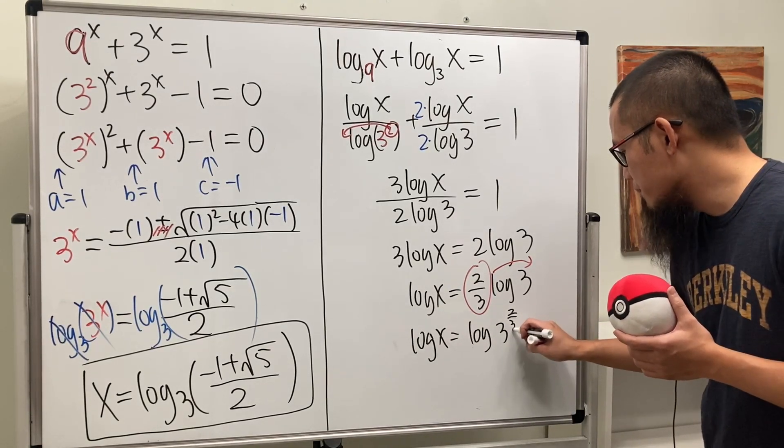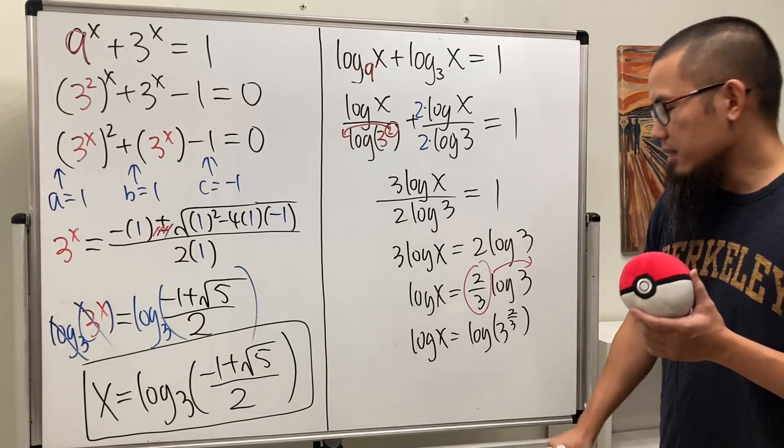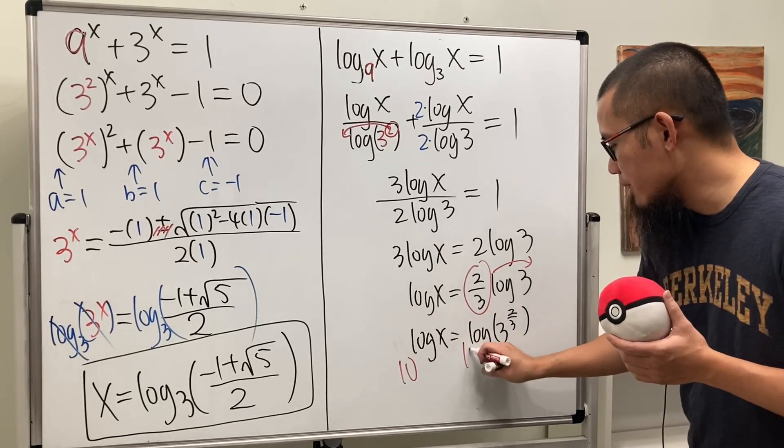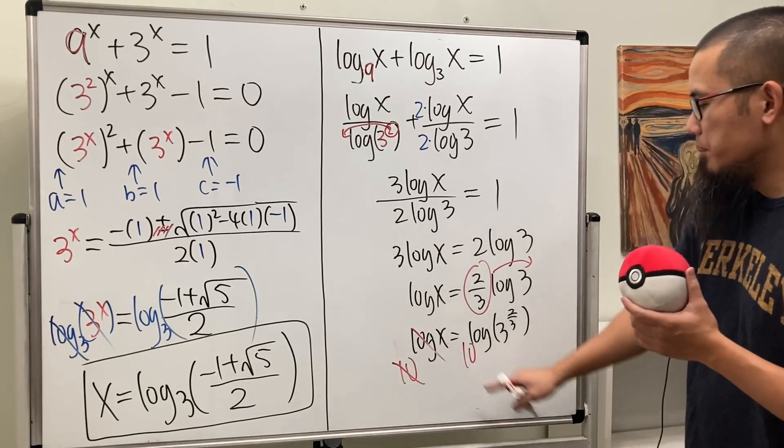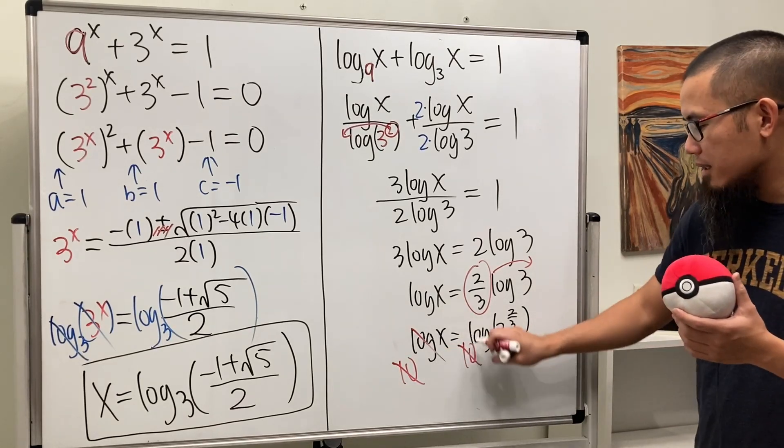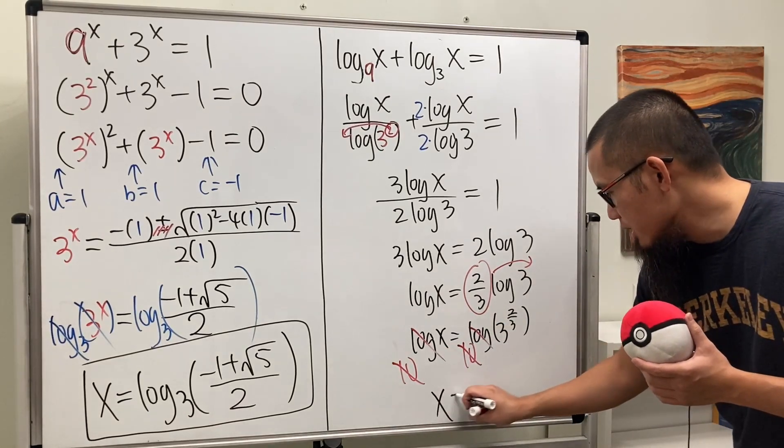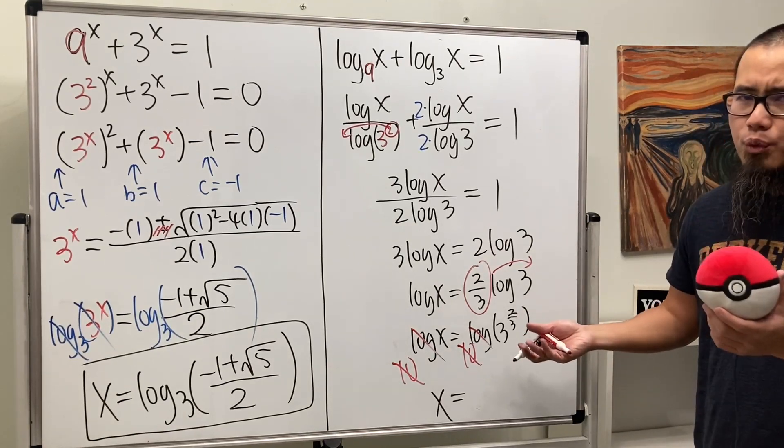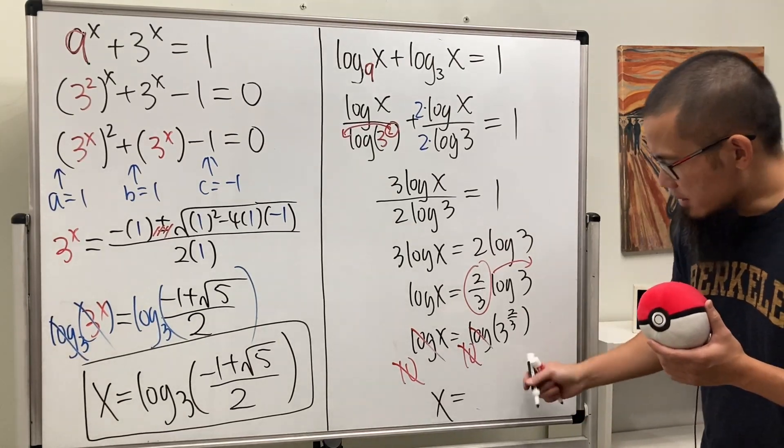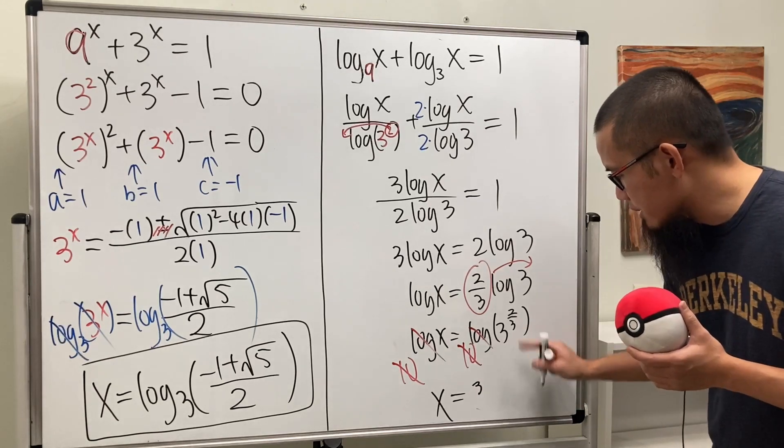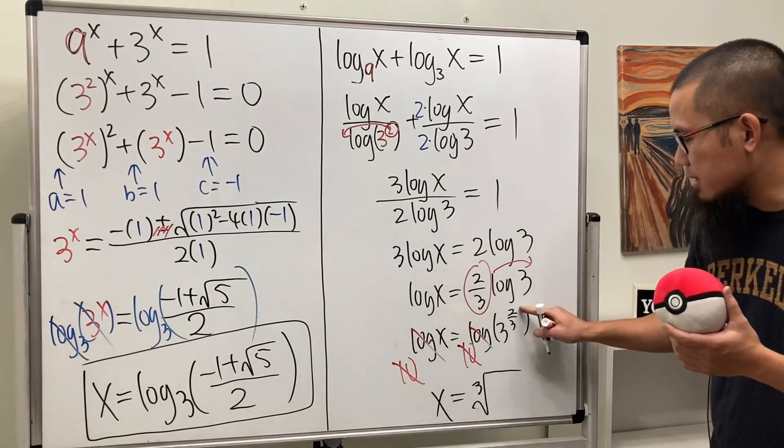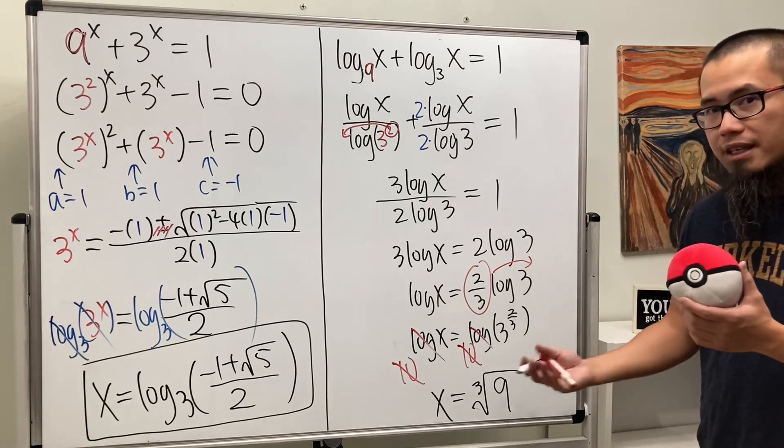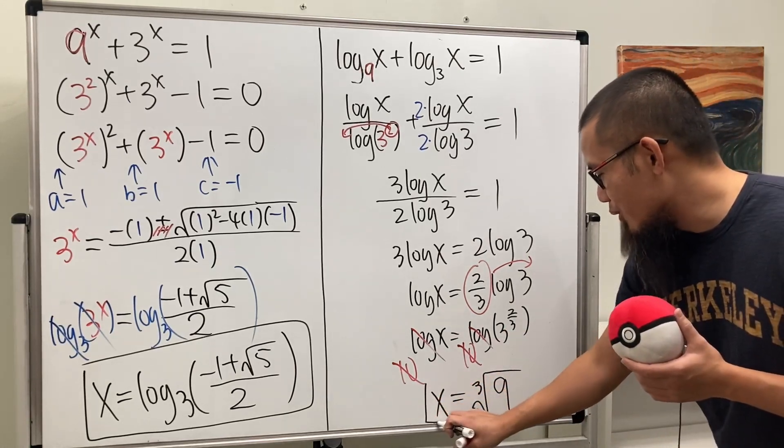In the end we can just do 10 to that power and 10 to that power - they cancel, meaning that x will be equal to that. So x equals 3 to the 2 over 3 power. If you would like, you can work that out in the sense of the cube root and then 3 to the second power is 9. So x is equal to the cube root of 9.